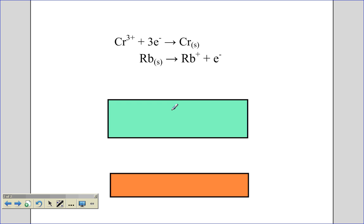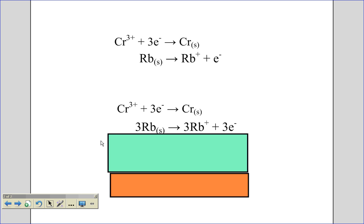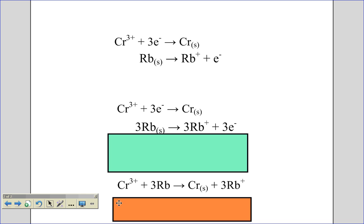So I need to multiply the rubidium by three, so there's three of everything including three electrons. Now the electrons are going to cancel, and if the electrons cancel, I can combine the two together into the overall reaction for this half cell. One chromium ion, three rubidium atoms makes one chromium atom and three rubidium ions.